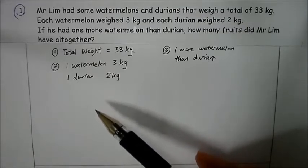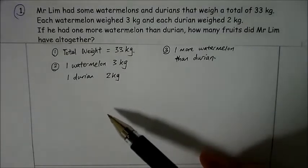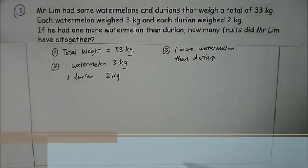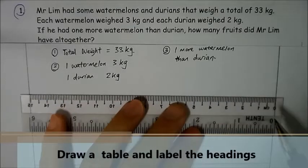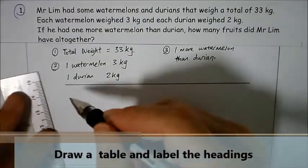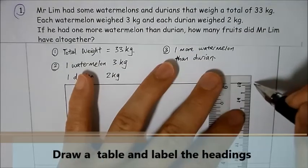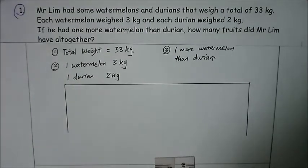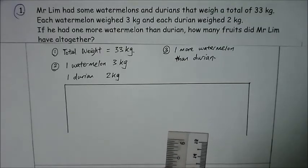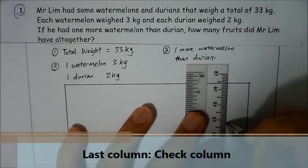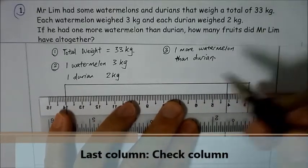Every time we use the guess and check method, we are supposed to draw a table to help us with our working. Because we are using guess and check, the checking of our answers is very important, so we need to draw a column on the right-hand side and label it 'check'.